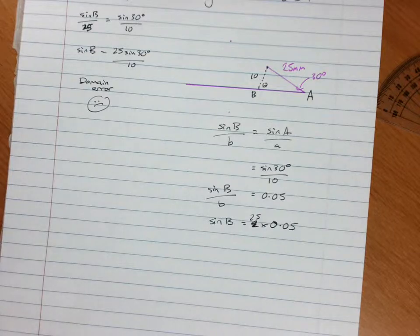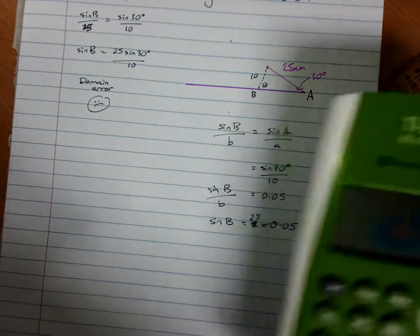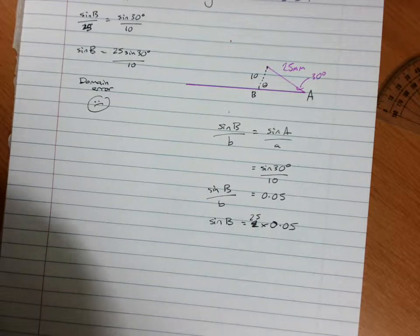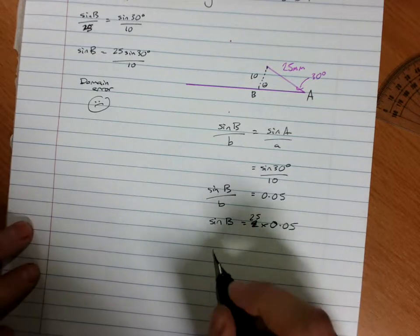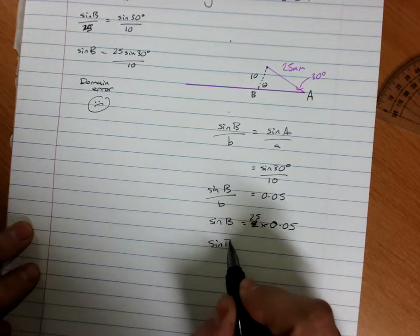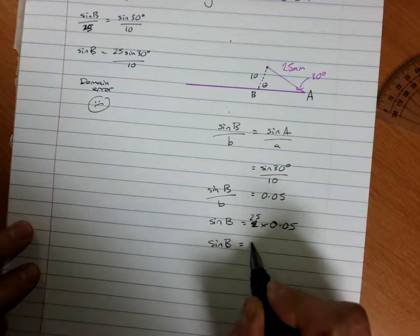And grab my calculator, because I'm not feeling very smart. Okay, here we go. We have sine of the angle is 1.25.